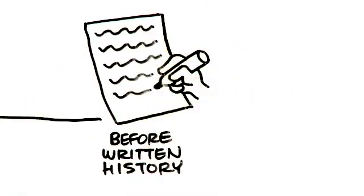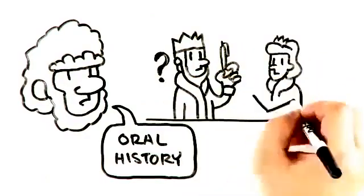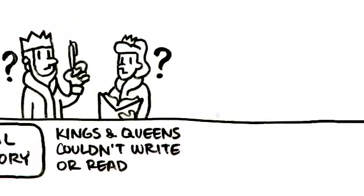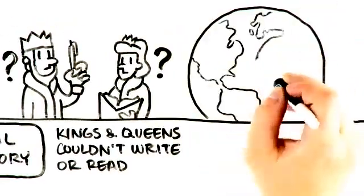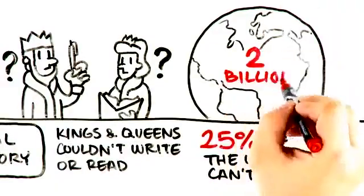Before written history, we had an oral history. Most people, even kings and queens, couldn't write or read in ancient times. Even today, still 25% of the world's population of 7 billion can't read, which is about 2 billion people.